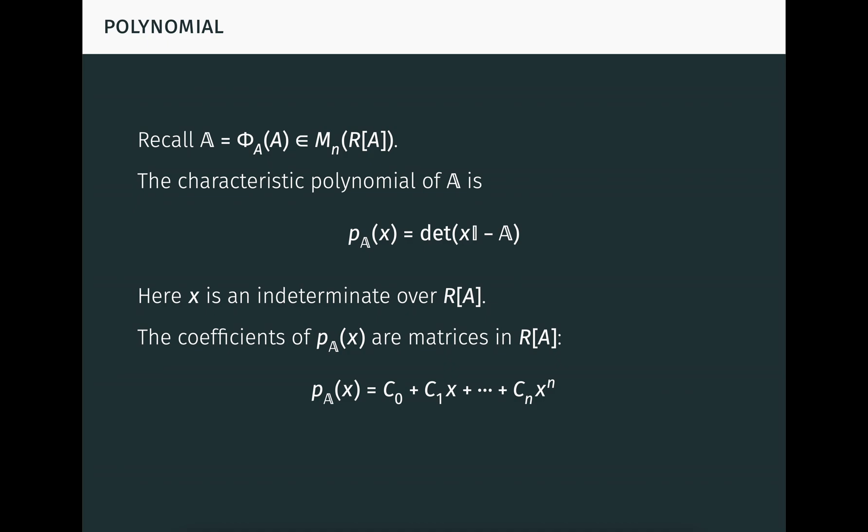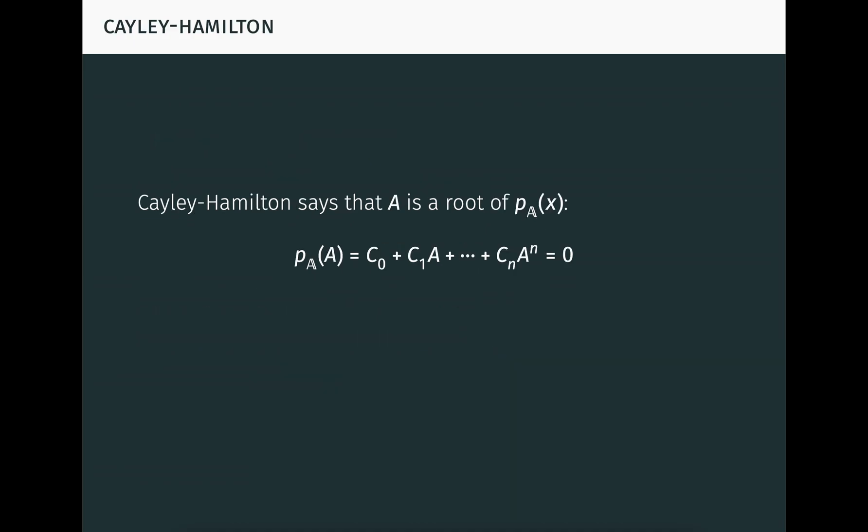Here X is an indeterminate over R[A], and you can check that bold I is indeed the identity matrix among matrices with entries in R[A]. It follows that the coefficients of this characteristic polynomial are matrices in R[A], denoted here by capital C's. Notice that the polynomial can also be viewed as a matrix with polynomial entries. Indeed, any polynomial with matrix coefficients can equivalently be viewed as a matrix with polynomial entries. Now the Cayley-Hamilton theorem just says that A is a root of this polynomial.